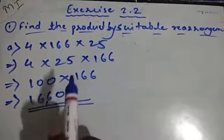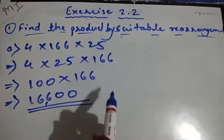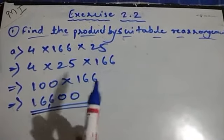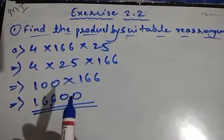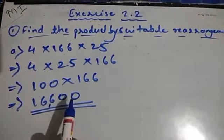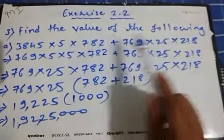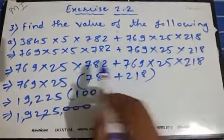As per our convenience, we change the order as well as the groups in multiplication and addition, because it is allowed. We studied the properties of addition and multiplication — commutative and associative — which permit this. I hope you understood this.